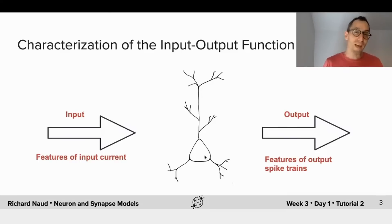Generally, its amplitude, how much current is flowing through. Now, the output can be many possible features of the output spike trains, as you will see.